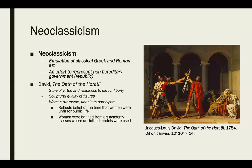The figures in the Oath of the Horatii have a very sculptural quality, still relying heavily on realism and idealism. Even though there's a fight for liberty, traditional views carry over. We see diversity in how women and men are treated — the women are very overcome and unable to participate, still seen as objects. This reflects the belief that women were unfit for public life, and women were even banned from the art academy where unclothed models were used.